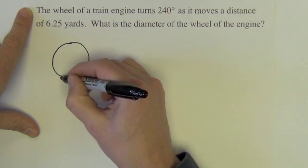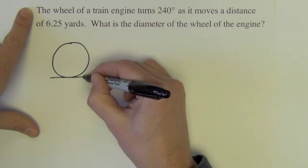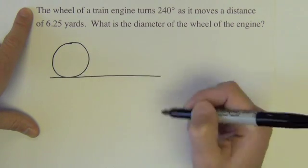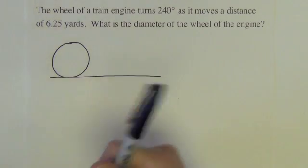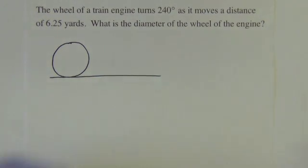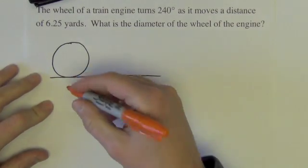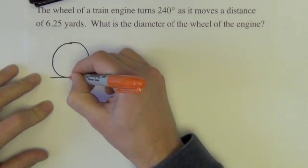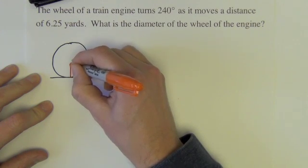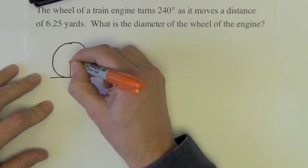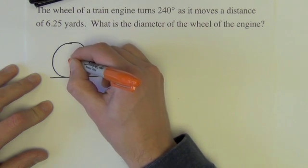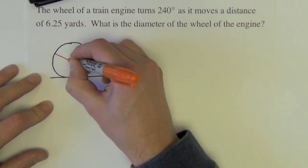Okay, there's my wheel. I'm just going to draw a line here. So what I want you to do is kind of envision that this wheel is going to rotate 240 degrees. 240 degrees would be an angle a little less than 270. So it would be kind of like that.